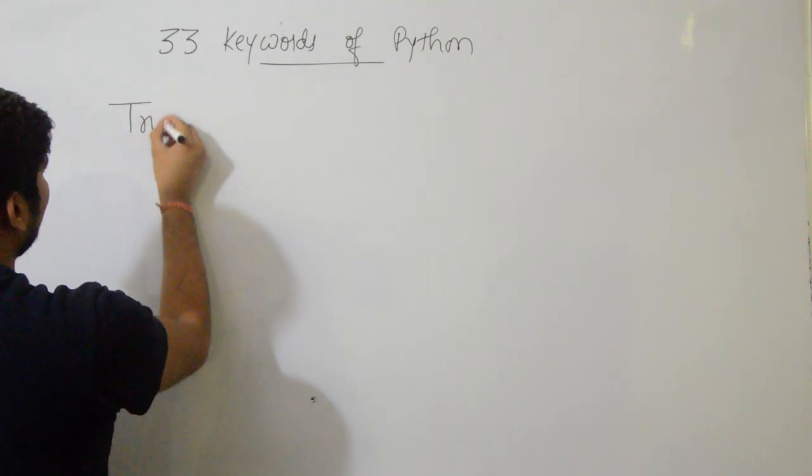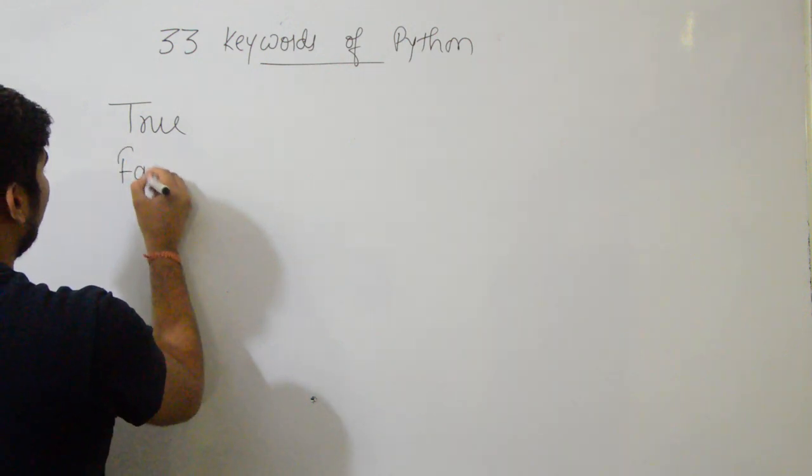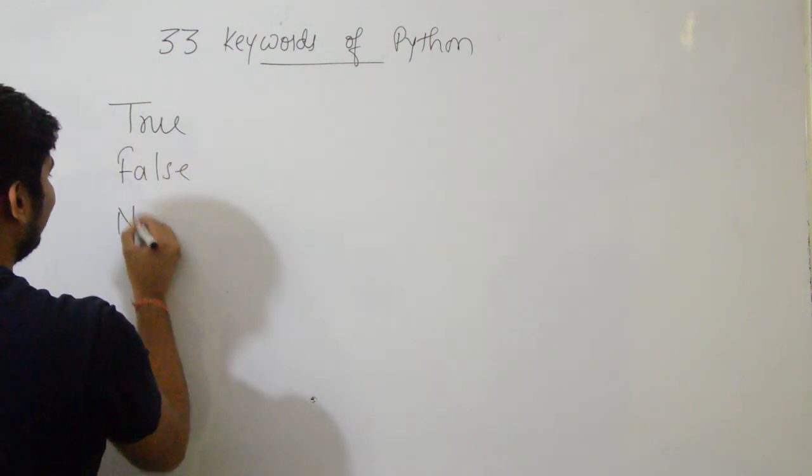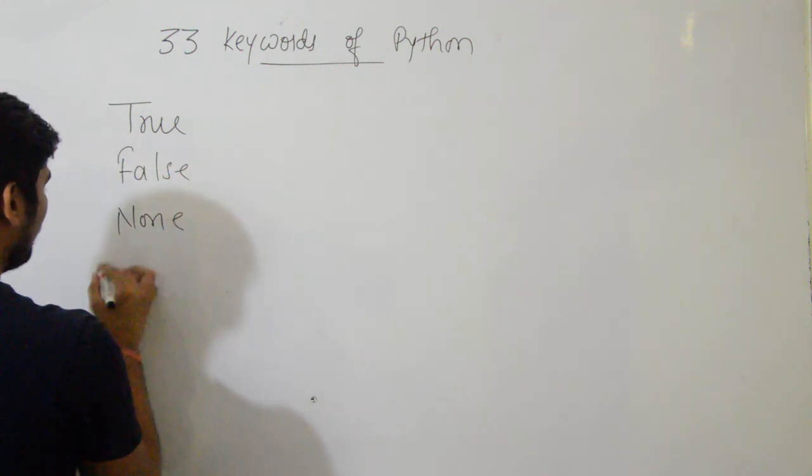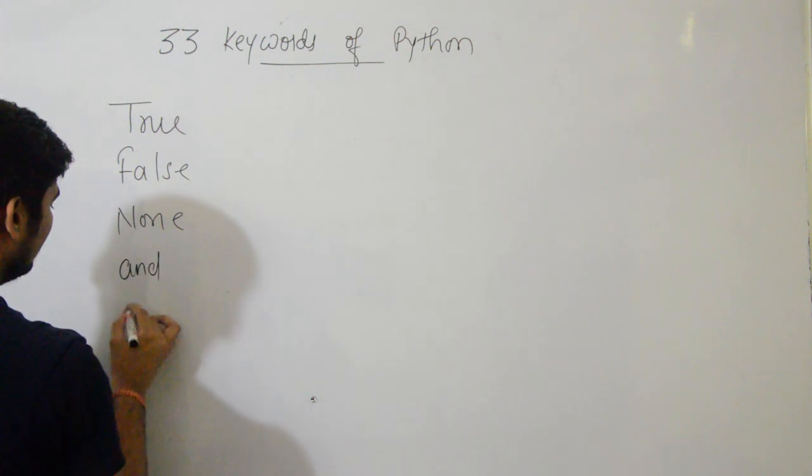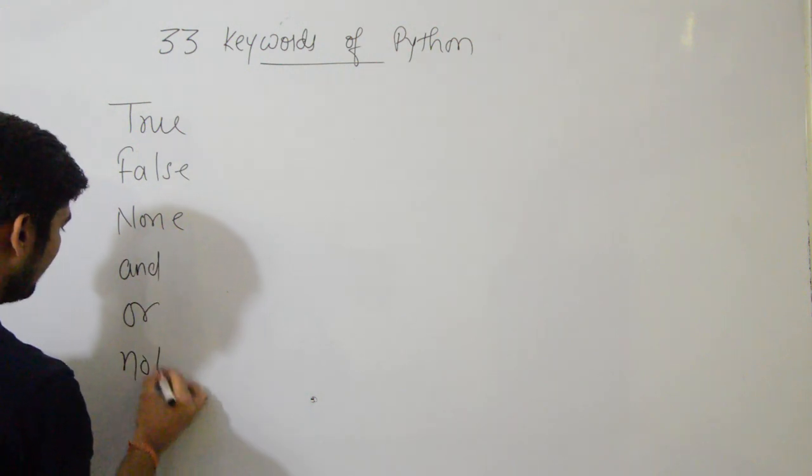Python's first keyword: True, False, None. Then And, Or, Not, Is.